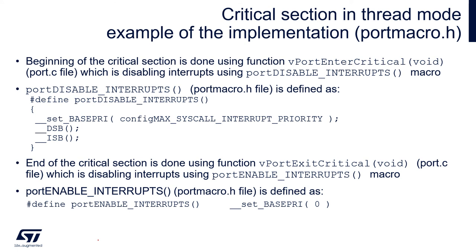Let's have a look at the critical section implementation within the port for STM32 devices. The critical section functions are stored within two files: port.c and portmacro.h. Within port.c, we find the C functions that allow us to enter and exit critical sections. Both functions call macros that operate on the BASEPRI register, masking interrupts and blocking them at a certain level. Within portENTER_CRITICAL, we call the portDISABLE_INTERRUPTS macro, which sets the BASEPRI register with configMAX_SYSCALL_INTERRUPT_PRIORITY - the maximum priority for interrupts allowed to execute operating system functions. The next two instructions are barrier instructions to ensure the preceding BASEPRI write is finalized in the system.